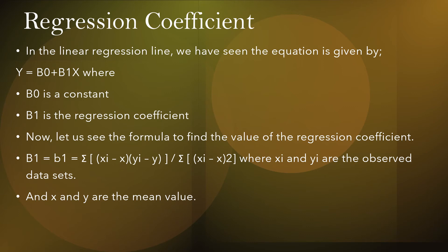Regarding the regression coefficient: in the linear regression equation y = b0 + b1·x, b0 is a constant and b1 is the regression coefficient. The formula to find b1 is: b1 = Σ(xi − x̄)(yi − ȳ) / Σ(xi − x̄)², where xi and yi are the observed data sets and x̄ and ȳ are the mean values.